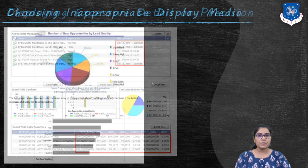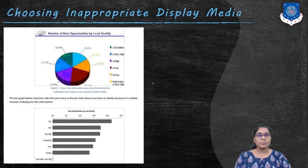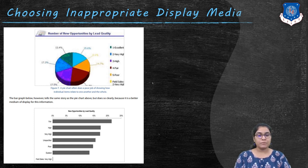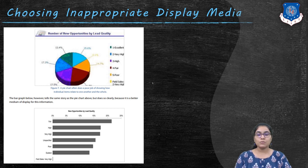The next design issue is choosing inappropriate display media. This is one of the most common design mistakes that happens not only in dashboard design but in all forms of data presentation. Using a graph when a table of numbers would work better and vice versa is a frequent mistake. But what is more common is using the wrong type of graph for the data and its message.